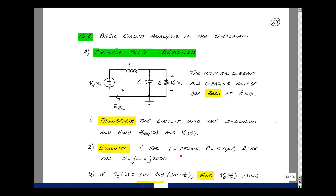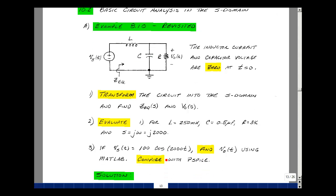Then evaluate that result with a 250 millihenry inductor, a 0.5 microfarad capacitor, and a 3k ohm resistor. Assuming that our frequency is 2,000 radians per second, in other words, S is equal to J omega would be J2000. If V of S is 100 cosine of 2000t, could you find V out of T using MATLAB and compare the results with PSPICE?